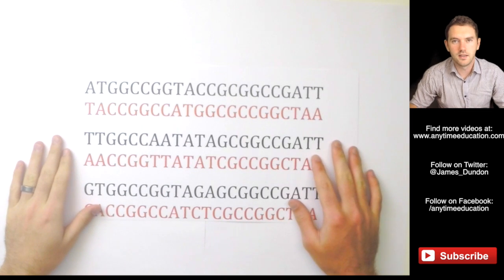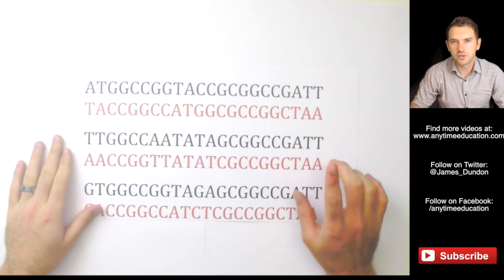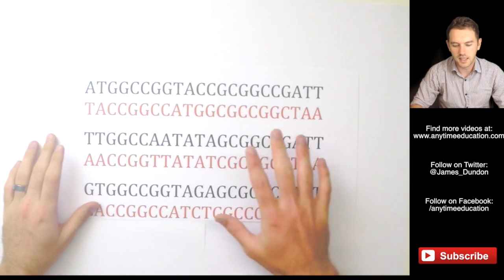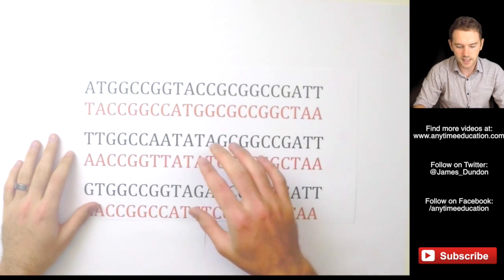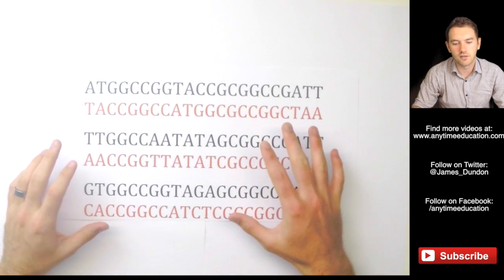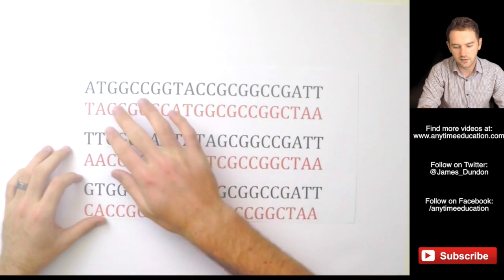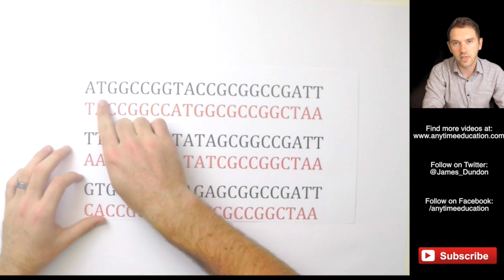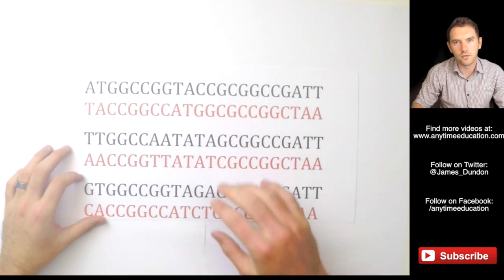Okay. In front of me here, we have a sequence of DNA. Now, if you're not sure exactly about DNA, you might like to check out one of our other videos on anytimeeducation.com. It goes through DNA in lots of detail. But basically, DNA is our genetic or information storage component of cells. It is double-stranded and it consists of adenine, thymine, guanine, and cytosine. And these can be arranged in any order.